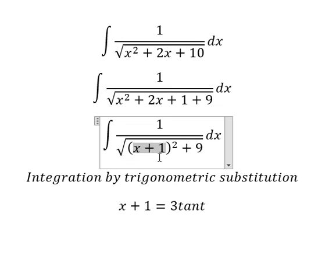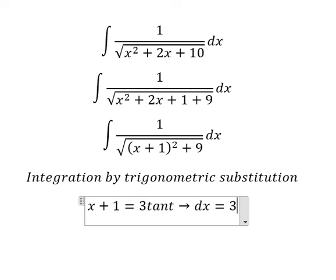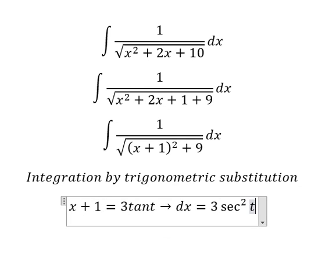We can factor out 9 times (tan²(t) + 1). We change this by sec²(t) and simplify the square root. For dx, we take the derivative of both sides and we have 3 sec²(t) dt.